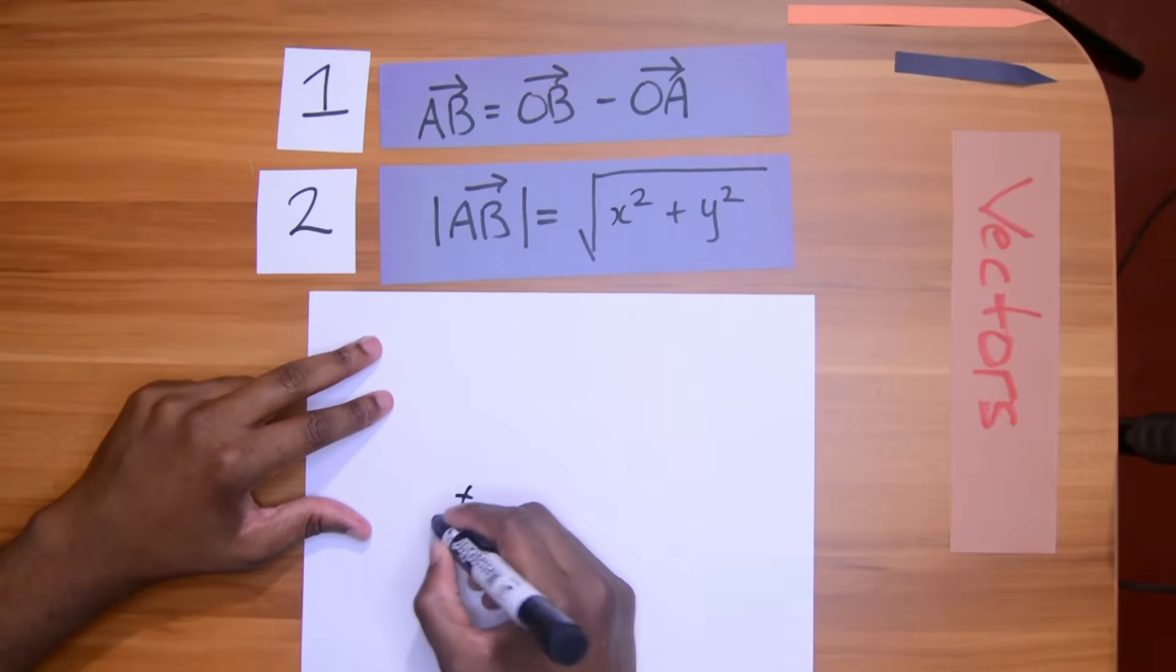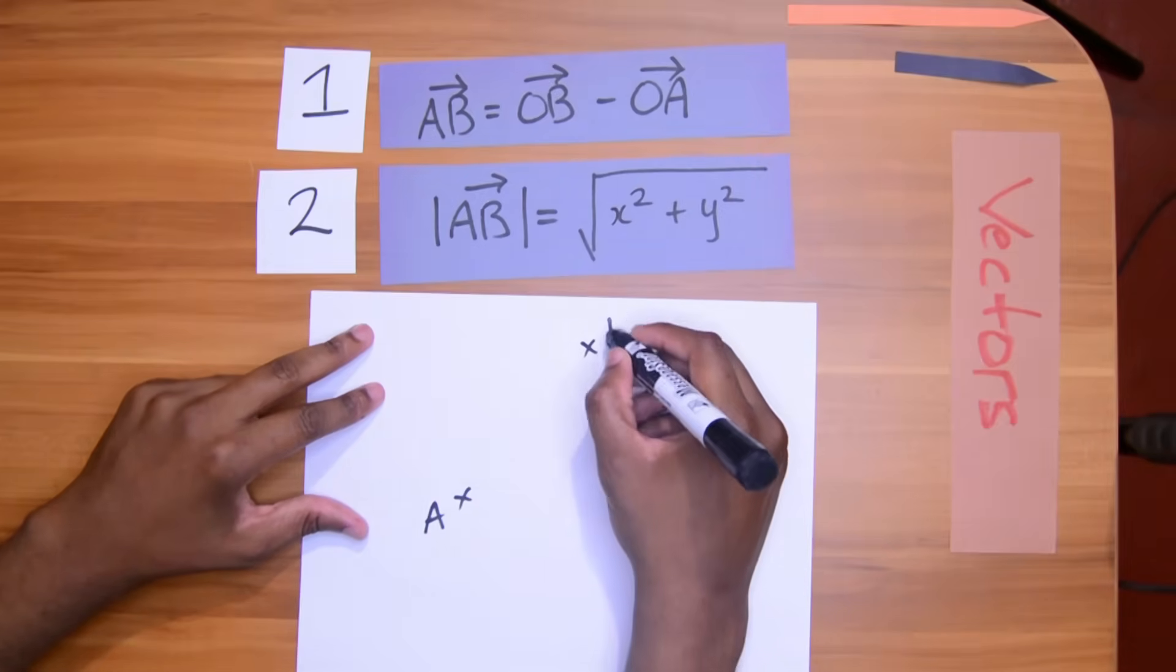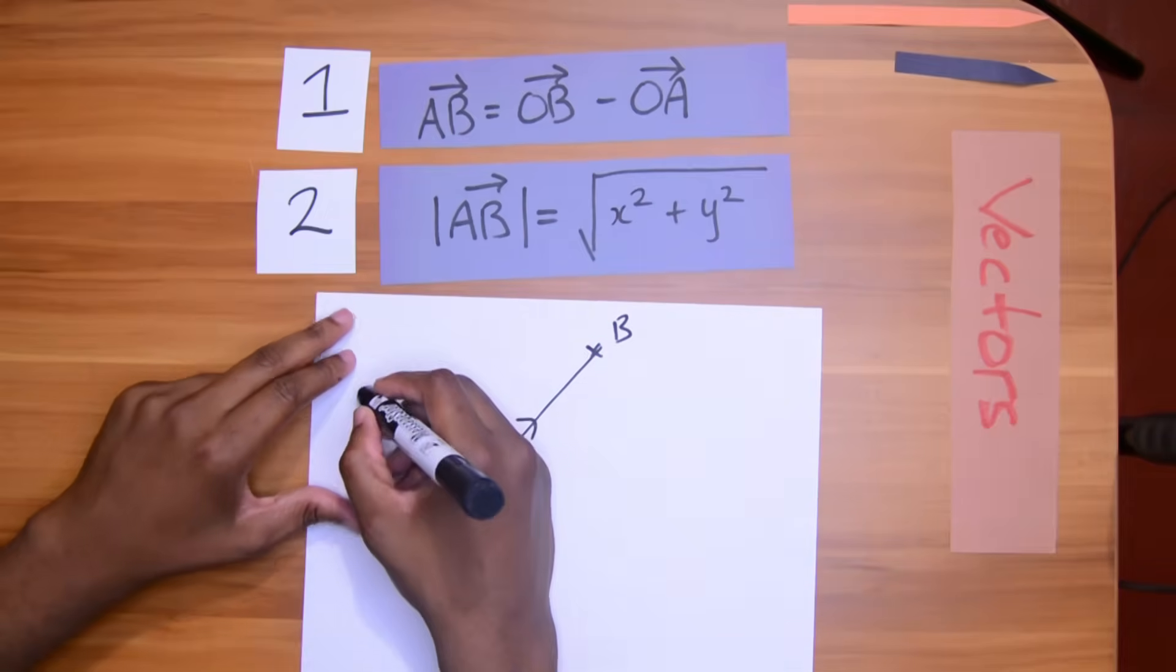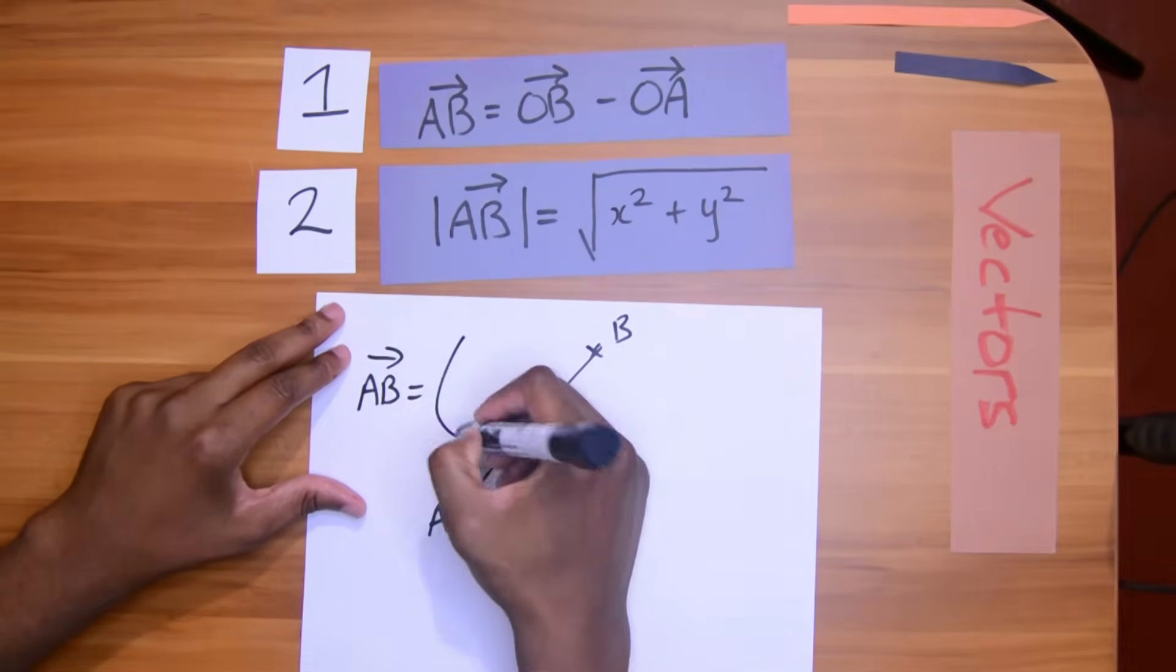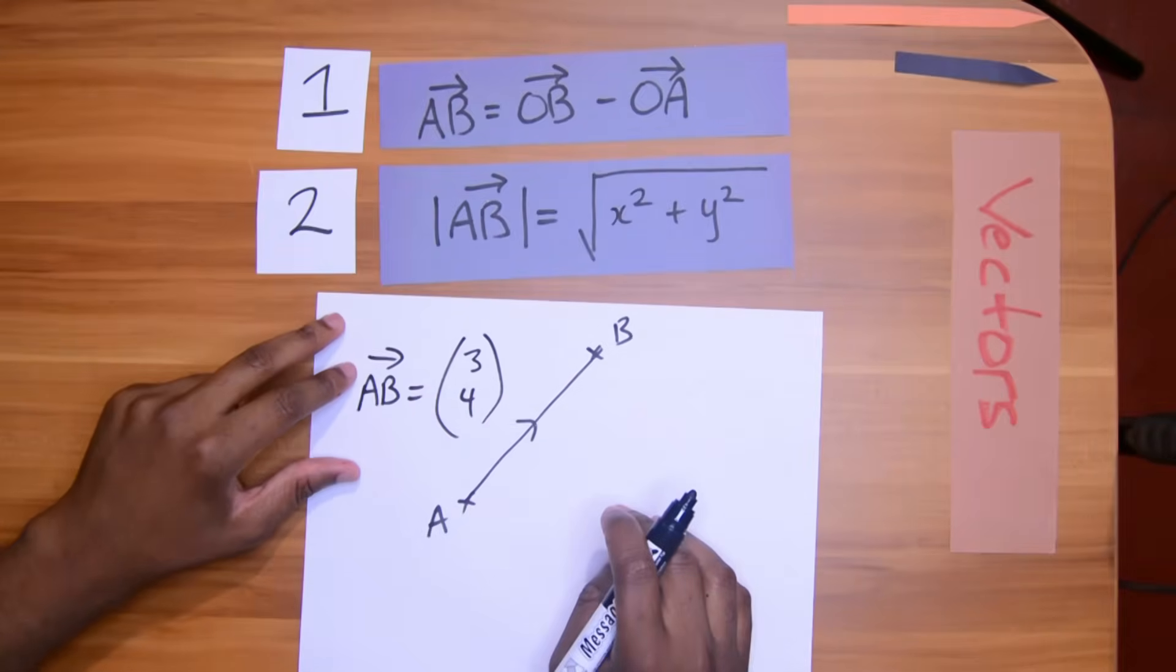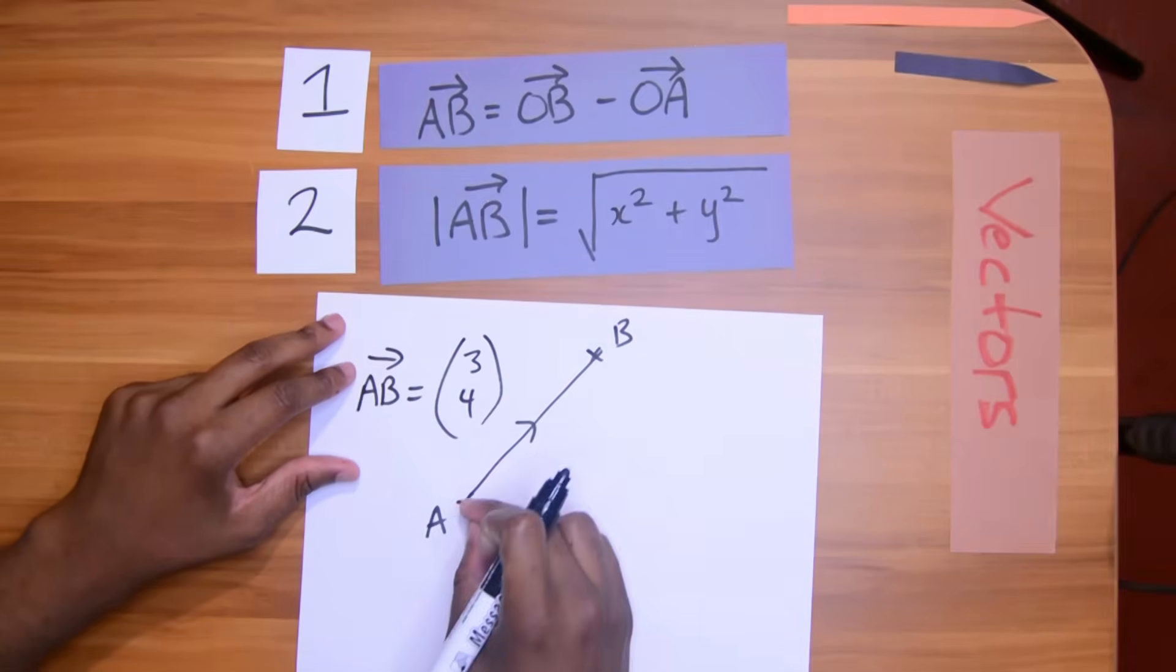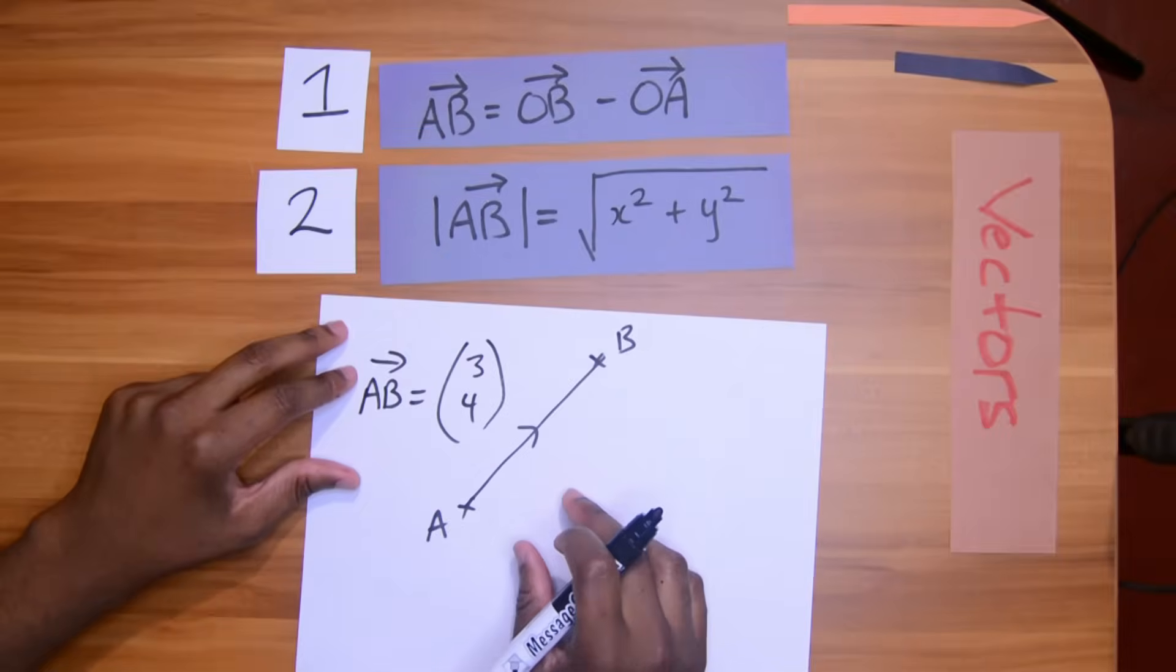Let's say we have a vector that's running from A to B up there. And let's say we know what vector AB is. Vector AB is equal to, let's make it 3, 4. And we want to find out what is the actual length or magnitude of vector AB. This is where this comes into place.